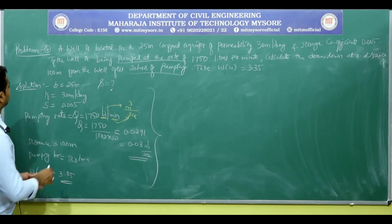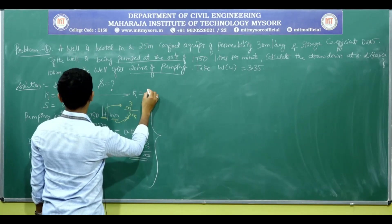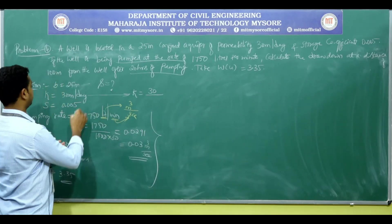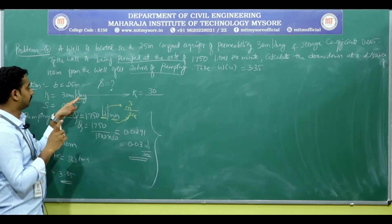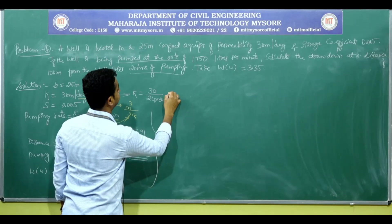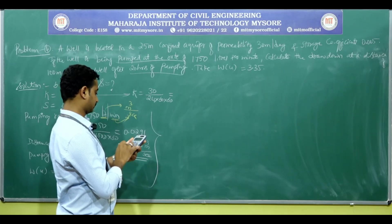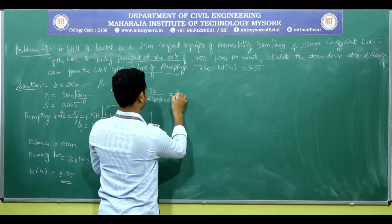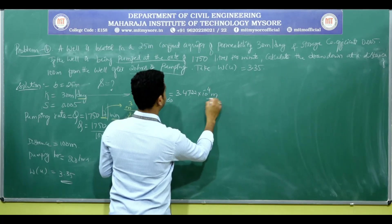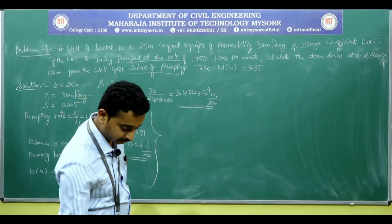K = 30 meters per day. Convert to meters per second: 30 divided by (24 × 60 × 60). The answer is 3.4722 × 10⁻⁴ meters per second.